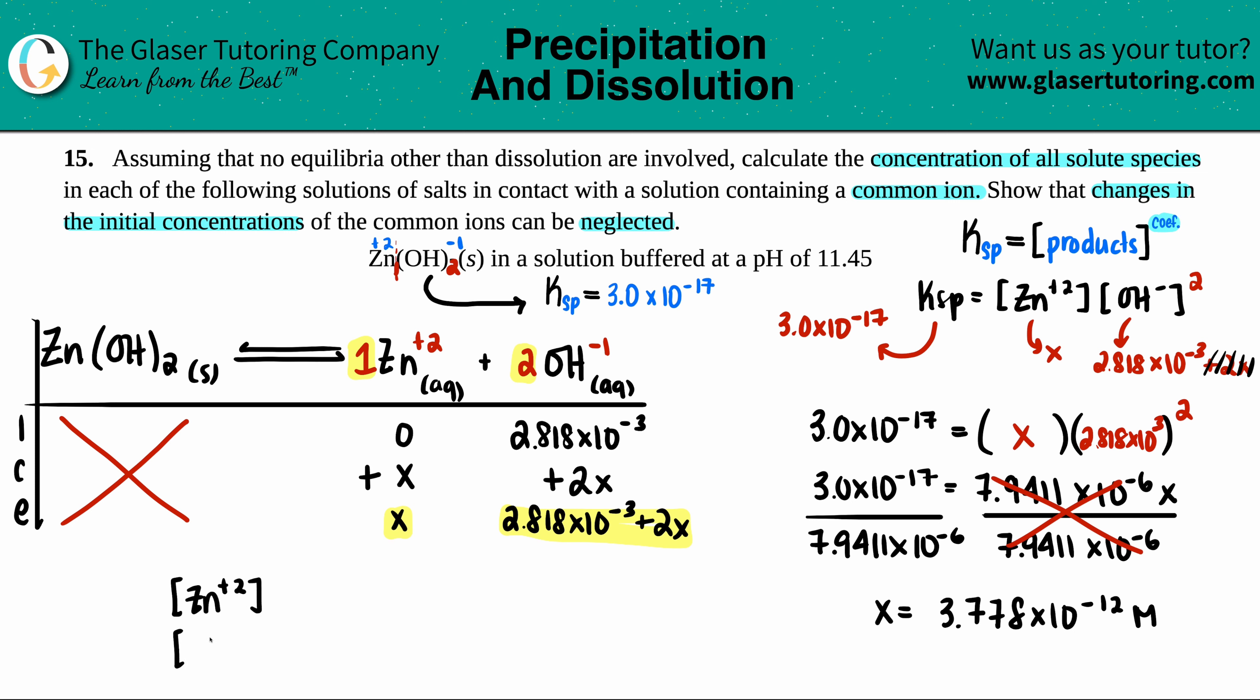Now we just have to find the calculations for the concentrations. So there's two of them, zinc plus 2 and the OH minus. Just remember that the zinc is the X and the OH is the 2.818 times 10 to the negative 3 plus 2X. So this would be just the X value, 3.778 times 10 to the negative 12th molarity. And then this would be 2.818 times 10 to the negative 3rd plus 2 times 3.778 times 10 to the negative 12th. Yeah, it doesn't change at all. So 2.818 times 10 to the negative 3rd molarity. And those are your two answers. Those are your concentrations of your solute species.